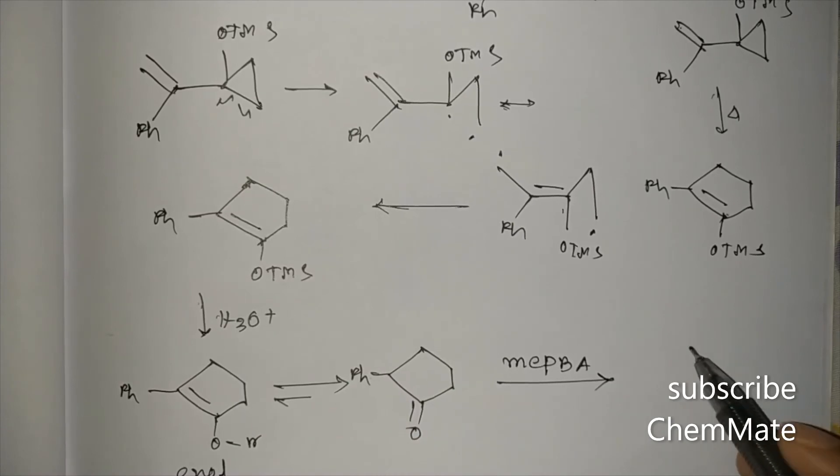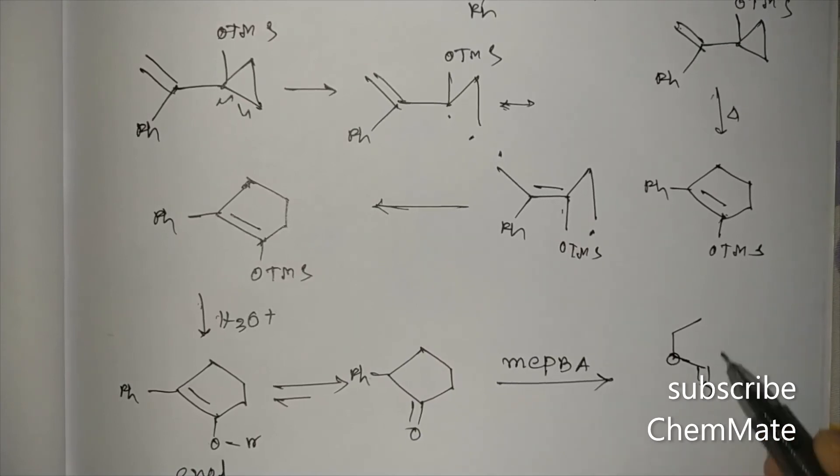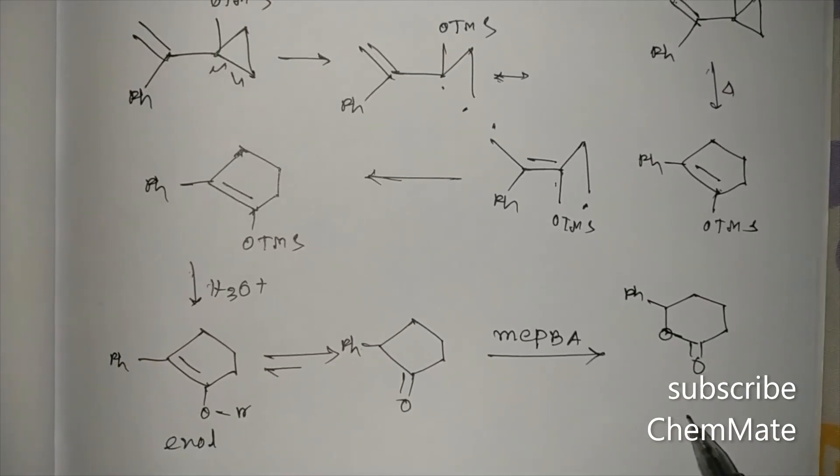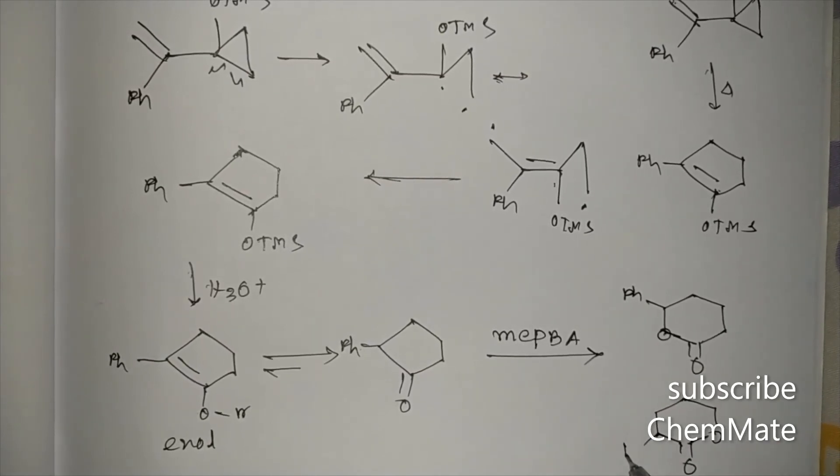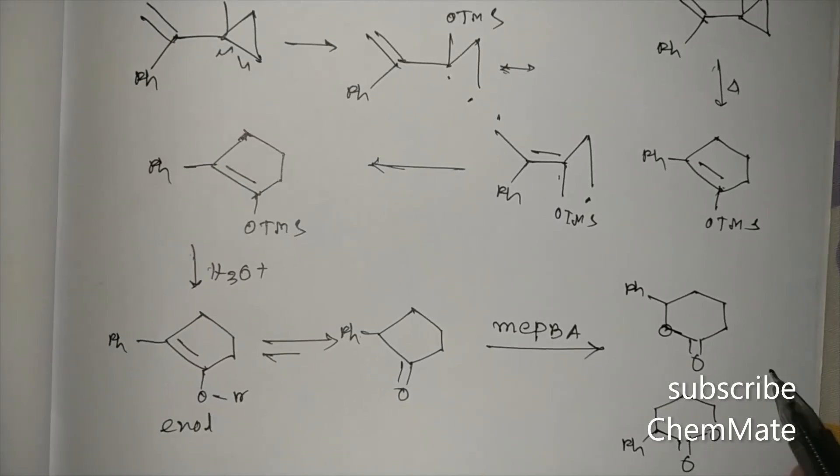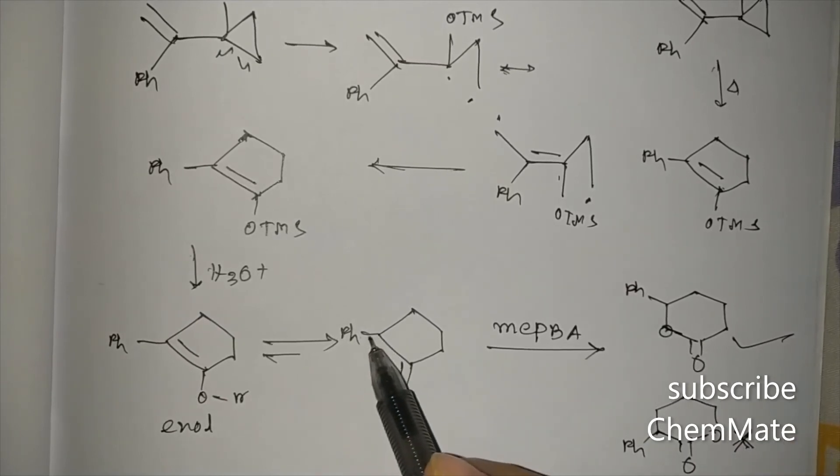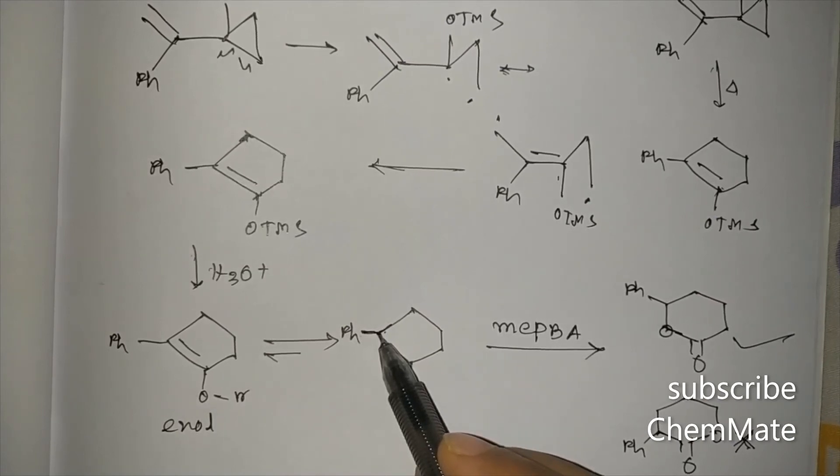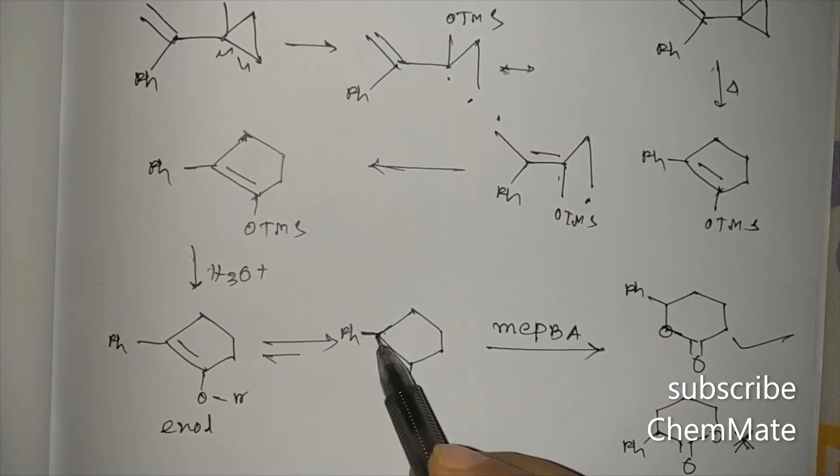Now two esters may be formed here. One is like this, and another is this. Between these two, this will be formed and this will not form. This will be found as a minor product; this is a major product because here the positive charge will be stabilized more because of this phenyl group, and this is actually a secondary, right, secondary carbocation will be formed here; primary carbocation will be formed. So this carbocation will be more stable, so this group will migrate.